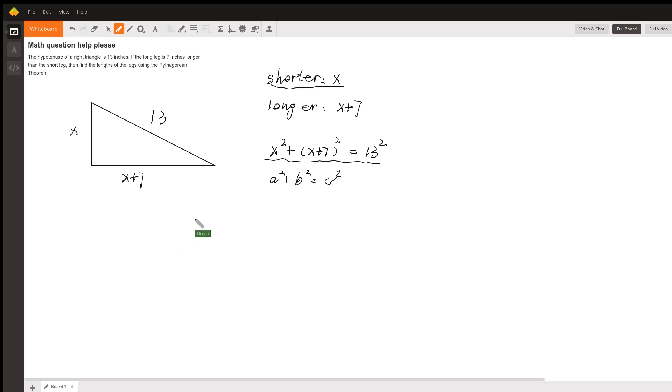x squared plus 14x plus 49 is equal to 13 squared which is 169. So these two can combine, so 2x squared plus 14x. We can minus 169 on both sides so this becomes negative 120 which is equal to zero.